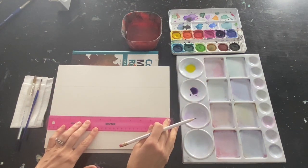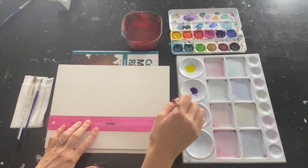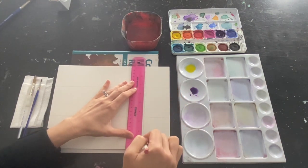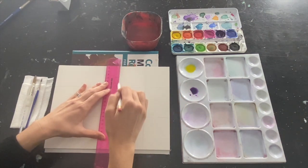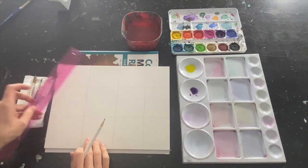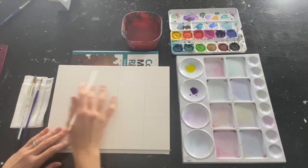I'm going to divide my paper into three this way, and then a few going this way. So I have a grid of 12.